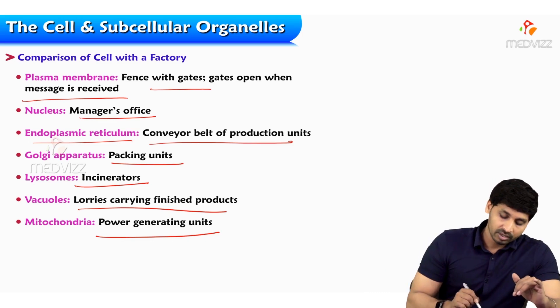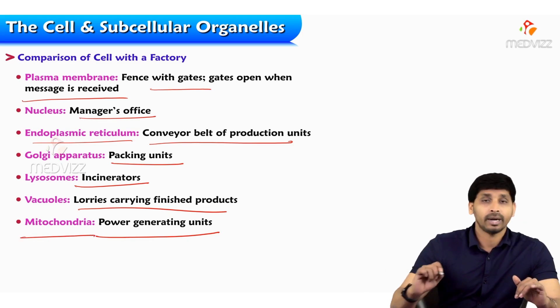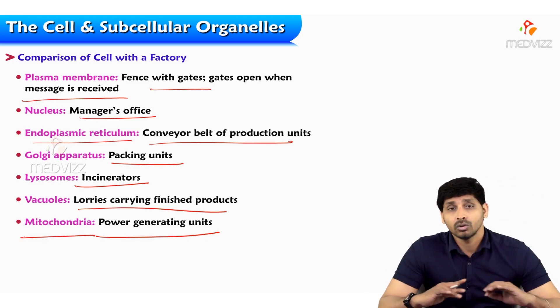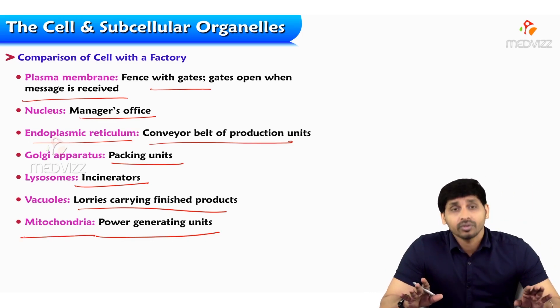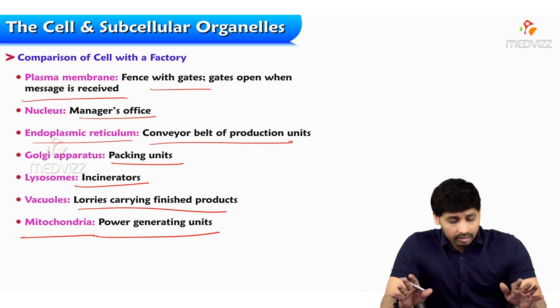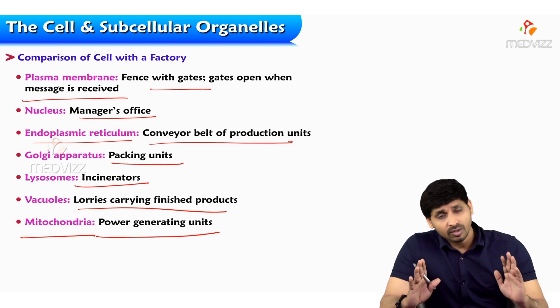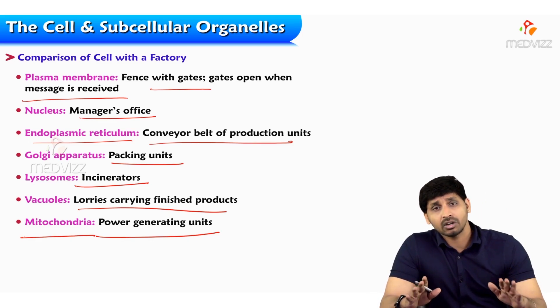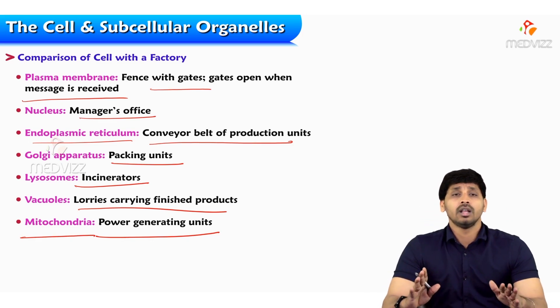So the power generator in the cell is the mitochondria. This way, you can compare the functions of subcellular organelles in a cell.